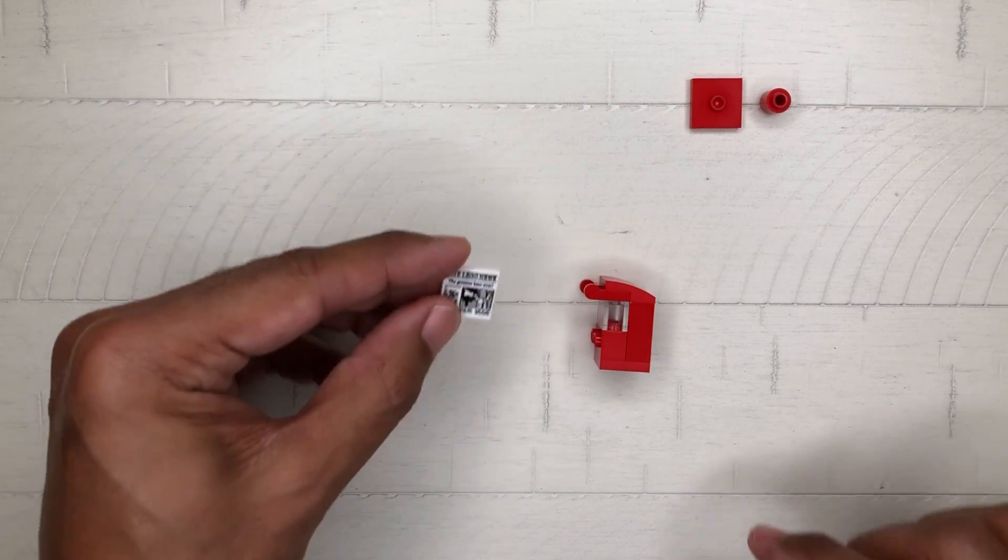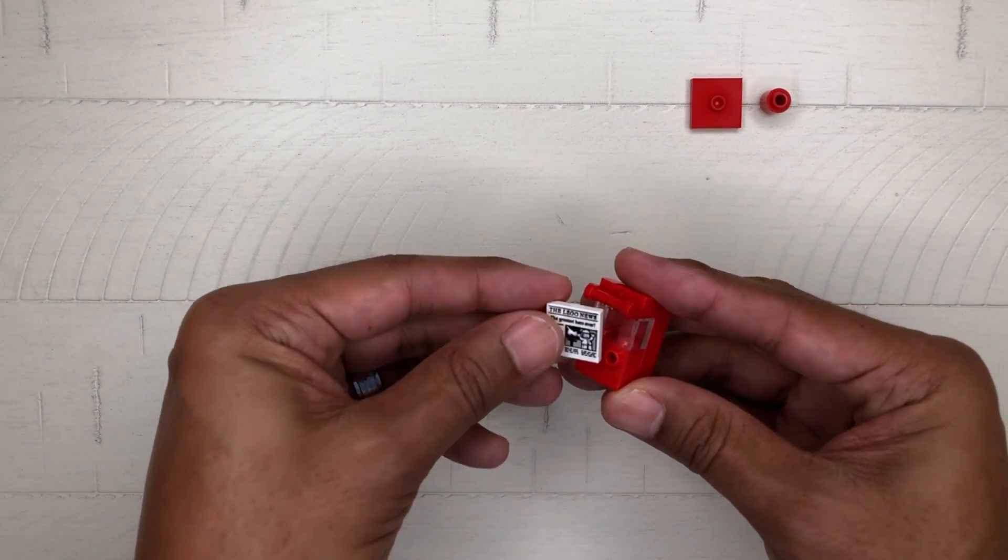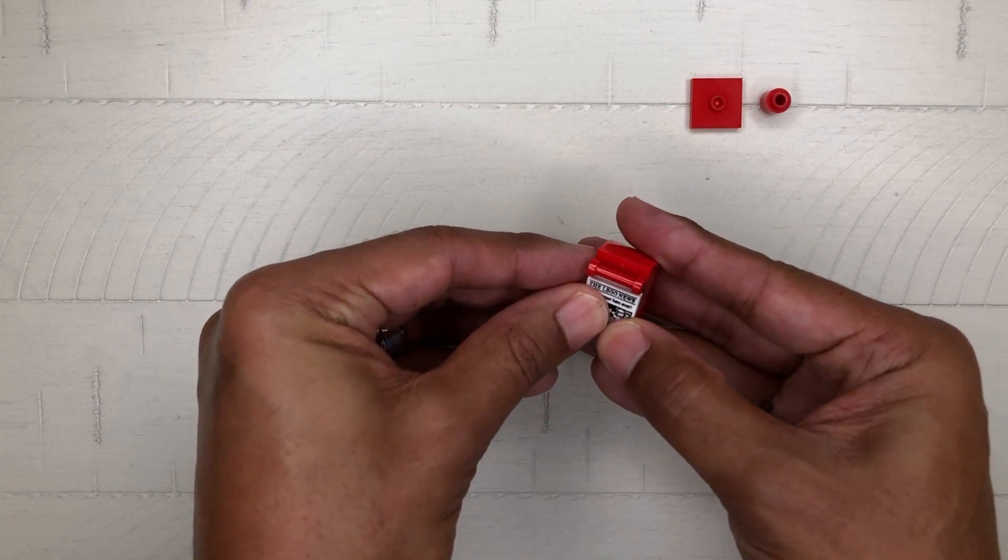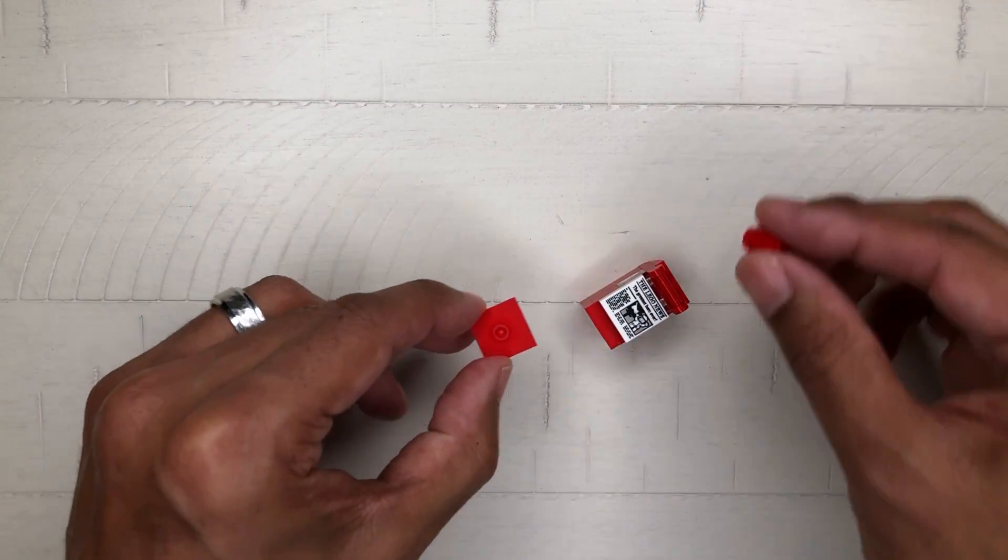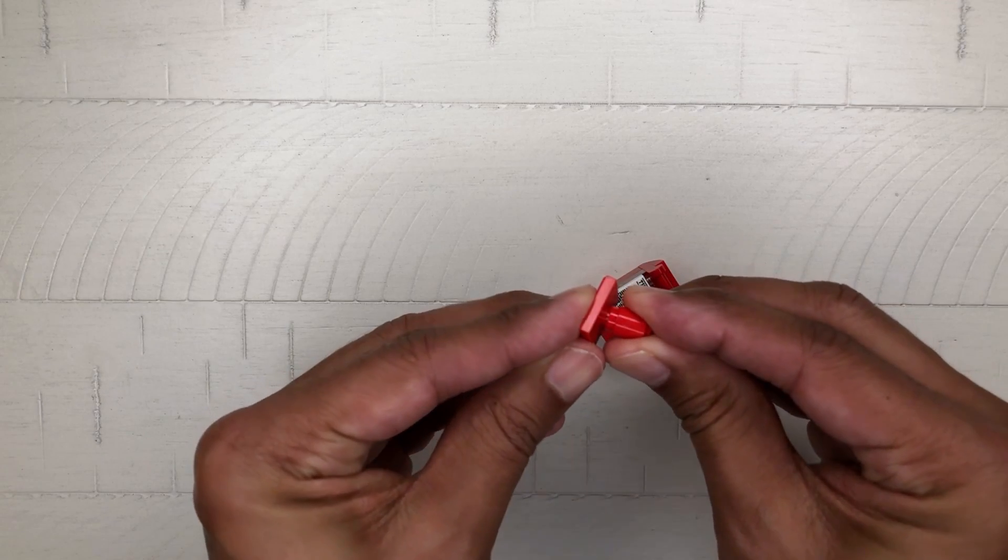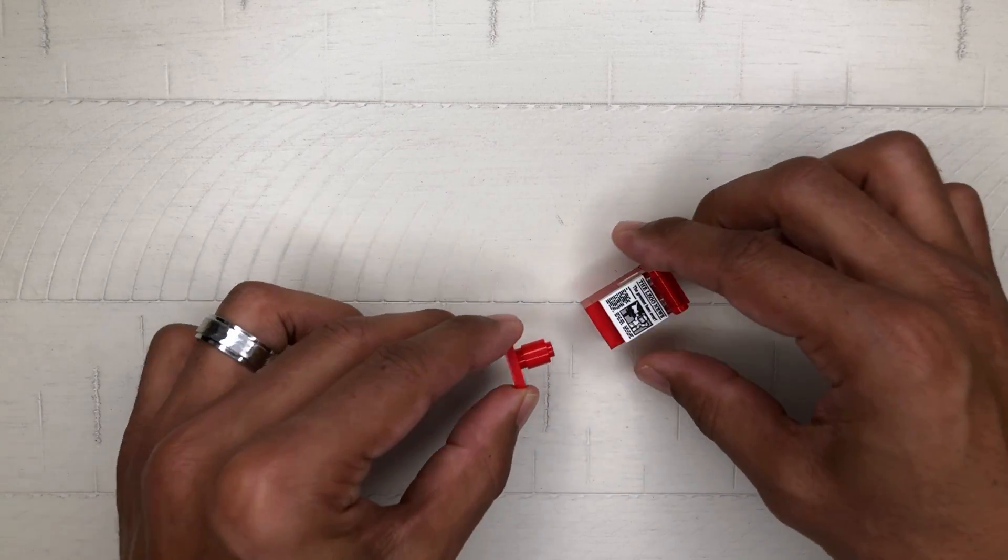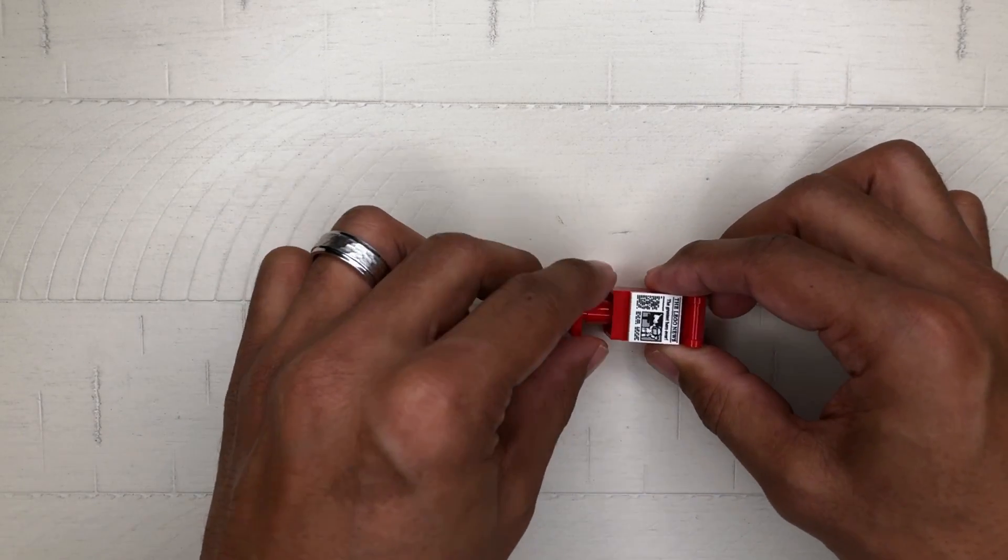Grab the newspaper and attach it to the side studded brick. Now take the 2x2 modified plate and place the 1x1 round brick on top of the previous brick. Attach that to the underneath of our build and we're done.